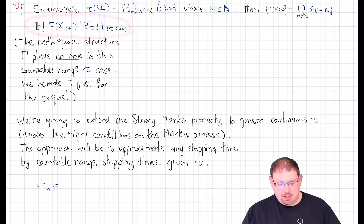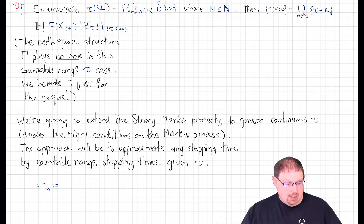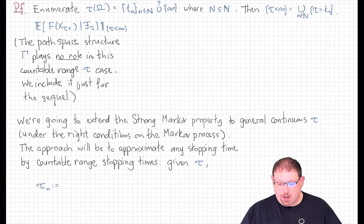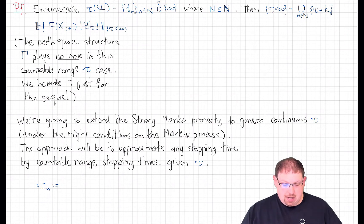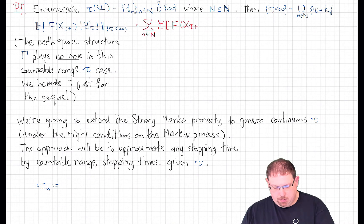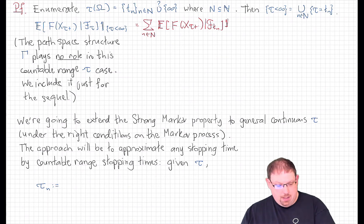Now let's just compute. The left-hand side of the desired equality is this conditional expectation. In lecture 45.3, we showed how to condition a random variable on this sigma field in the case where tau was a discrete stopping time. Nothing in that proof required the stopping time to take values 1, 2, 3, etc. All that was required is that it had countable range. So we can use that exact formulation here, and compute this conditional expectation as the sum over n of the conditional expectation of f of x_{tau plus dot} given F_{t_n} on the event that tau equals t_n.